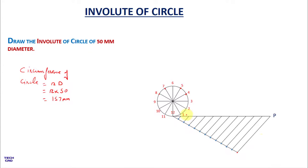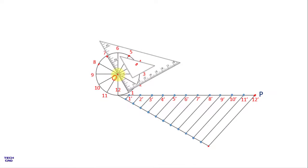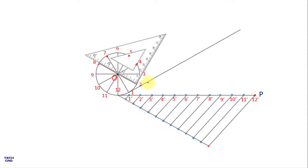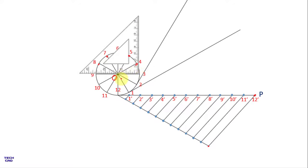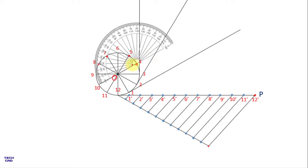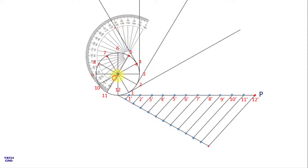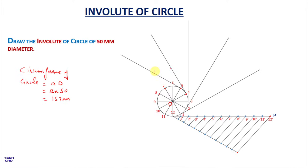Name these division points from 1-dash to 12-dash, where 12-dash and P are the same point. Now draw tangent lines from each of the 12 equal divisions of the circle. Name the center O. Take a set square parallel to O1 and make a tangent from point 1. In the same way, put the set square at O2 and make a tangent, then at O3 and make a tangent. You can also use a protractor: align its base line parallel to O4, mark a point at 90 degrees, and draw the tangent line. Repeat this for O5 and subsequent divisions.